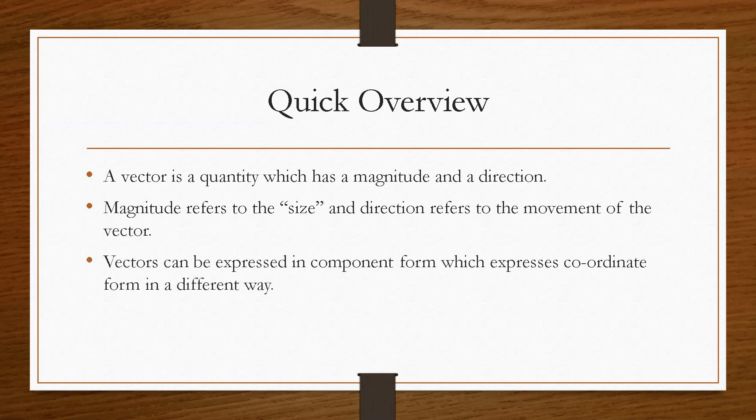The vectors can be expressed in what's known as component form, but they can also be expressed in coordinate form in a slightly different way to what we're normally used to. A quantity which has a magnitude but no direction is referred to as a scalar.